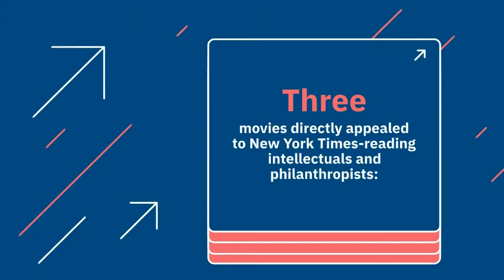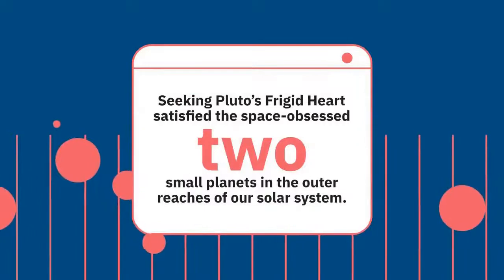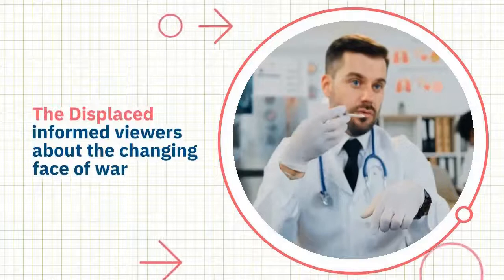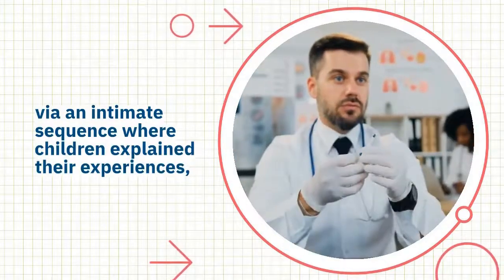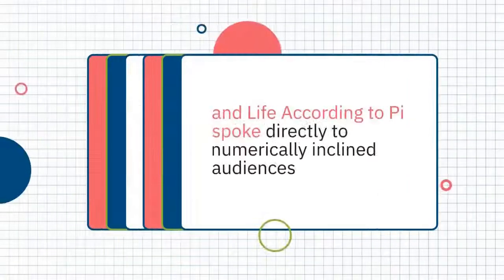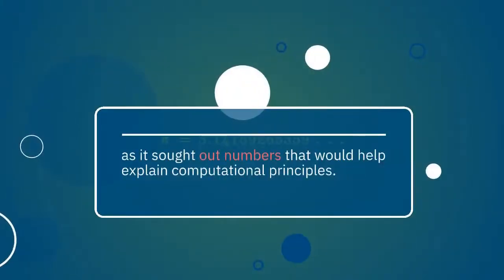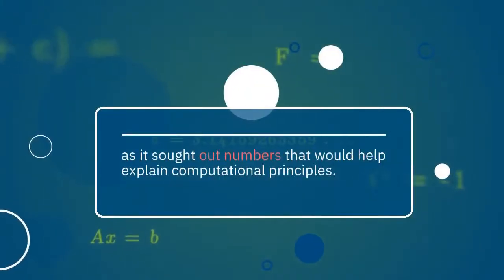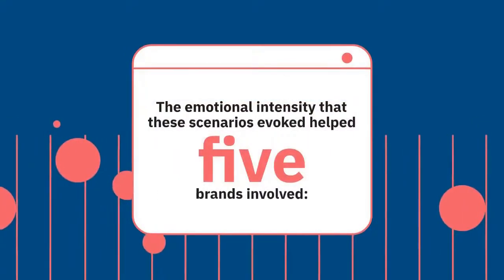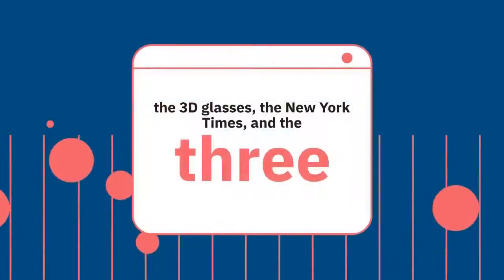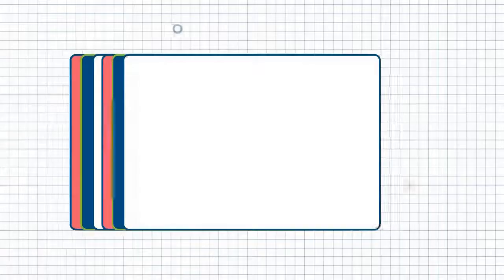Three movies directly appealed to New York Times reading intellectuals and philanthropists. Seeking Pluto's Frigid Heart satisfied the space obsessed with a virtual tour of two small planets in the outer reaches of our solar system, The Displaced informed viewers about the changing face of war via an intimate sequence where children explained their experiences, and Life According to Pi spoke directly to numerically inclined audiences as it sought out numbers that would help explain computational principles. The emotional intensity that these scenarios evoked helped reinforce brand loyalty for all five brands involved: the 3D glasses, the New York Times, and the three featured films.